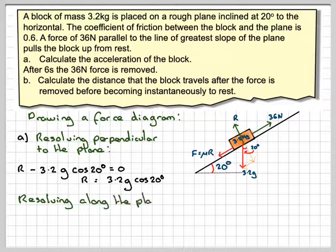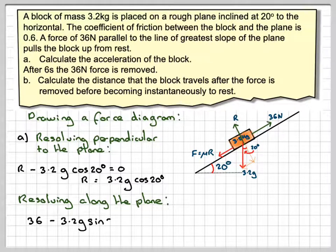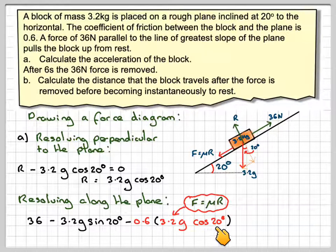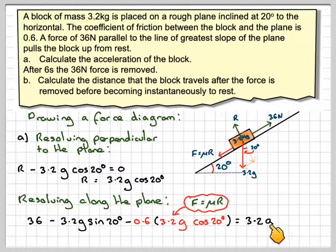Resolving along the plane, we're going to have 36 minus 3.2g sin 20, this component of the weight, and then minus the friction. So minus mu, which is 0.6 in the question, times R, which is 3.2g cos 20. And that's going to be equal to mass times acceleration, so that's going to be equal to 3.2 times A.